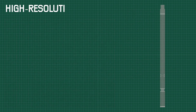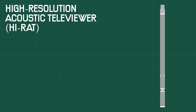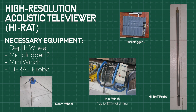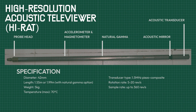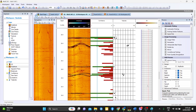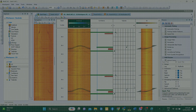The high-resolution acoustic televiewer, or HI-RAT, provides a continuous high-resolution and magnetically-oriented ultrasound image of the borehole wall. Necessary equipment includes a depth wheel, micro-logger 2, mini-winch, and the HI-RAT probe. HI-RAT data is then acquired using the micro-logger 2, a special software in the form of a standalone module used for logging the acoustic televiewer.